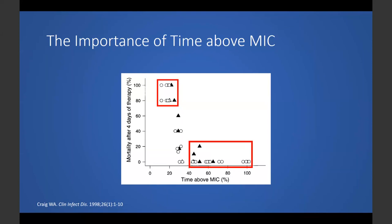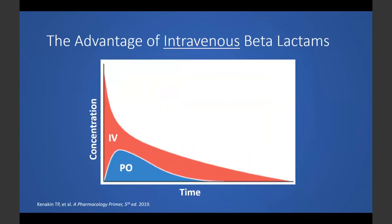In terms of route of administration and how it affects the all-important parameter of time above MIC: to maximize time above MIC, it's ideal to administer beta-lactams intravenously — you can get a lot more drug IV. Whereas when you give beta-lactams orally, you're really limited by absorption. You need big doses of oral beta-lactam to achieve adequate serum concentrations, but with big oral doses you're also severely limited by side effects, especially GI upset and diarrhea.